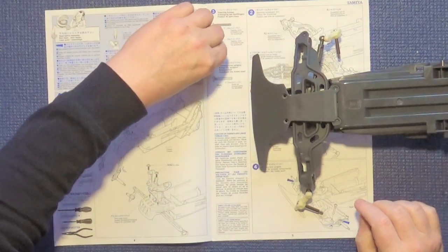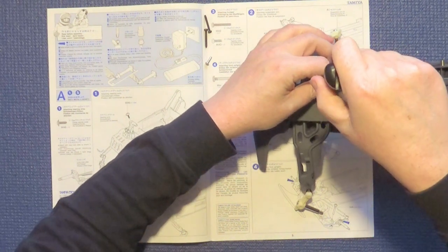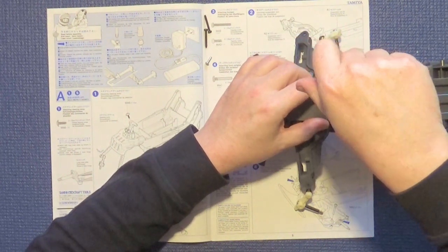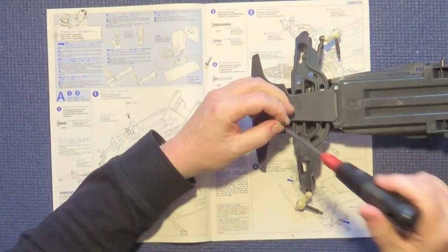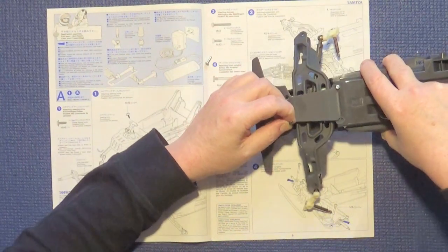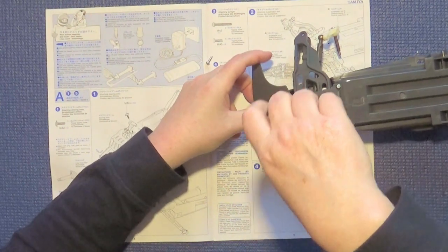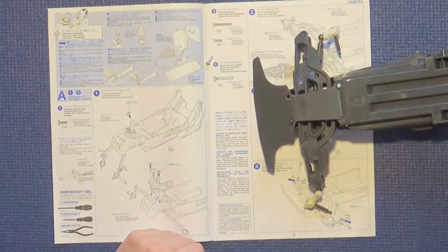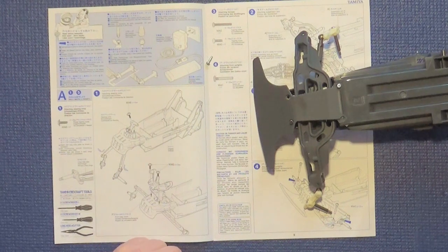Then we've got the shorter screws that go in at the back and these longer ones for the front. So you get those four ends screwed in and you can move on to step four.